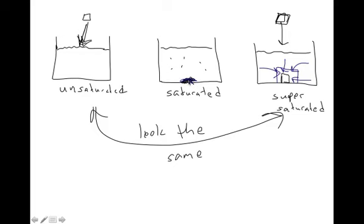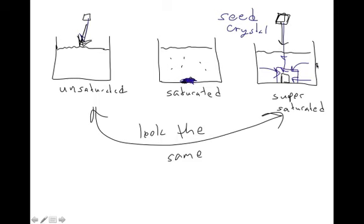So: saturated — easy to see, you have a crystal or granules at the bottom. Unsaturated — you don't see anything because everything's dissolved, and if you drop another crystal in, it dissolves. Supersaturated — you don't see anything because it's all dissolved, but if you drop what's called a seed crystal in, it grows. What do seeds do? Seeds grow. You drop that seed crystal in and it grows as the extra atoms attach to it. I'm going to show you in class a cool demonstration of a seed crystal growing.